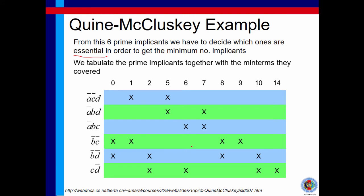The purpose of tabulating this in a table is to find the essential prime implicants. A prime implicant is essential if there is at least one minterm that is covered only by that prime implicant. For example, looking at this prime implicant, minterm 9 is covered only by it — no other prime implicant covers this minterm. So B̅C̅ is an essential prime implicant, meaning we cannot omit it from our final solution.